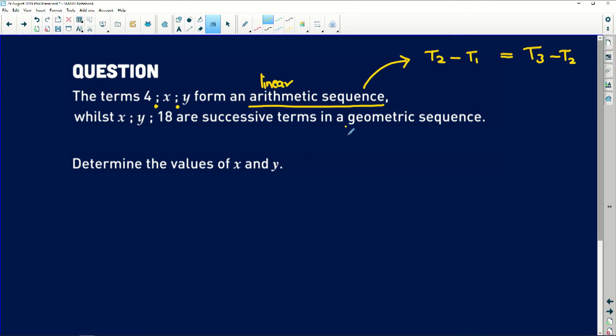Geometric sequence, what does that mean? If you said it has a common ratio, you are 100% correct, but how do we find the common ratio? We divide terms. So term 2 divided by term 1 is going to give us the same answer as if we divide term 3 by term 2. So how does that help us solve for x and y?